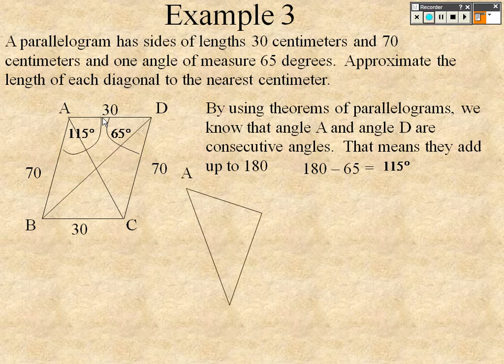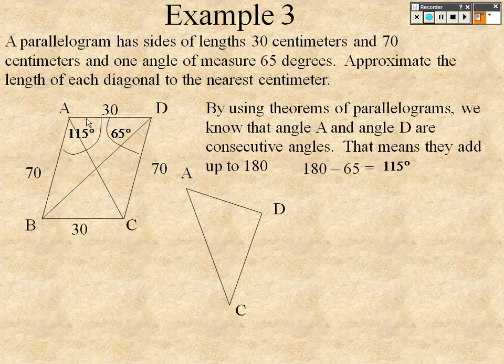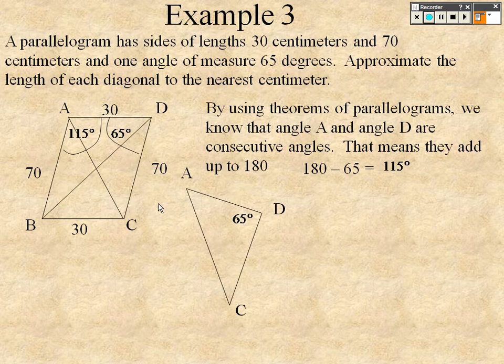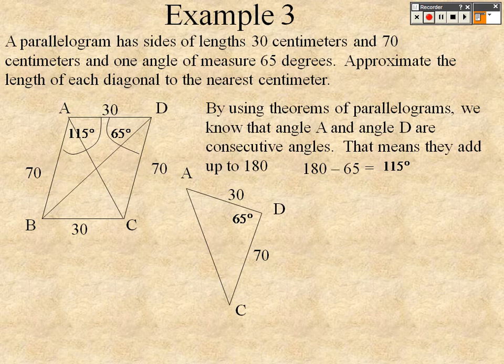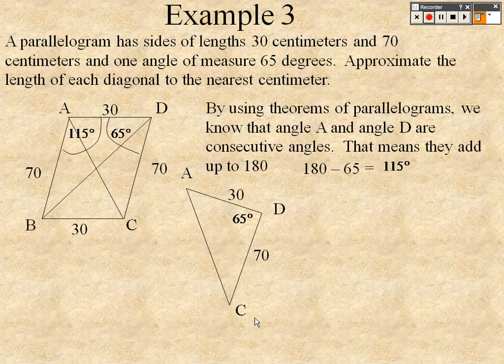Okay, so we have a triangle. That's A, that's D, that's C. I know that that whole thing is 65. I know that that's 30 and that's 70. The beautiful part about this is I can figure out what that diagonal is because I can use law of cosines. I can use law of cosines because it's side angle side to find out what that diagonal is.